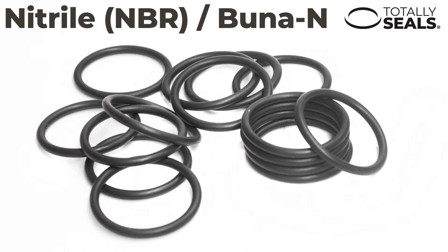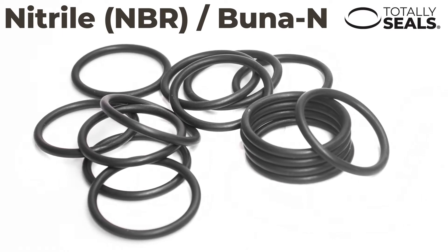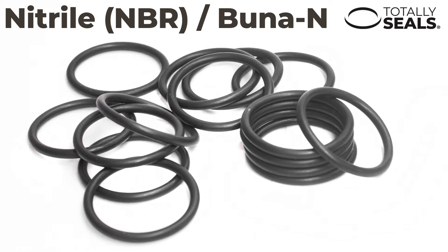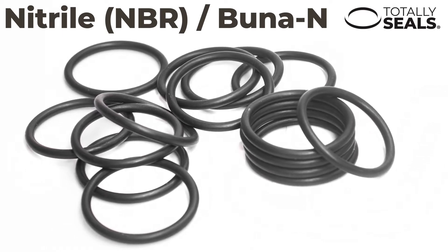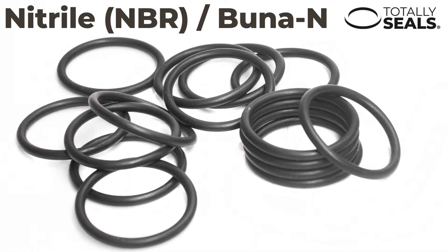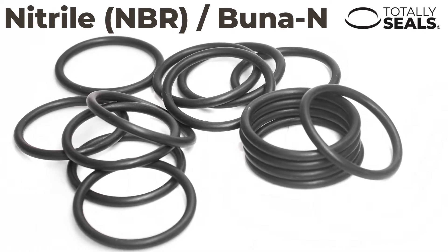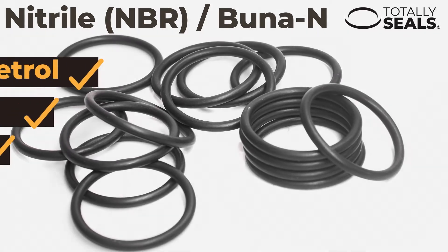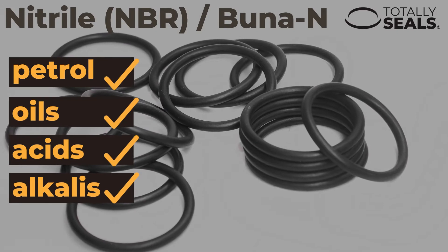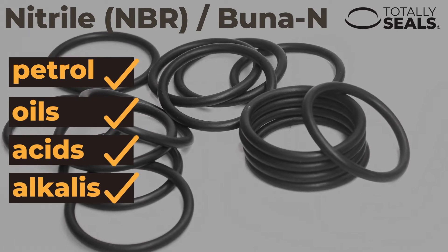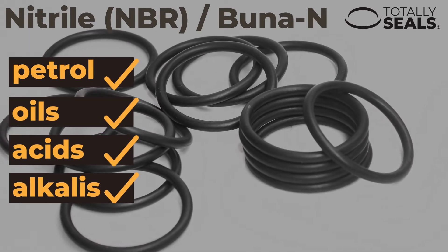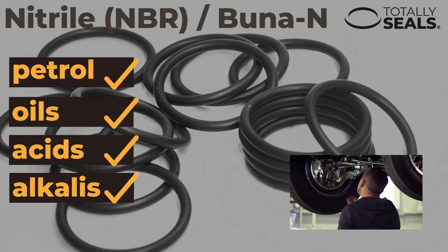Nitrile, also known as Buna N, is a synthetic rubber that is extremely versatile. It is commonly used because of its ability to resist chemicals, including petrol, oils, acids and alkalis. For this reason, it is common in automotive applications.